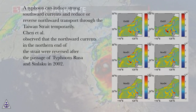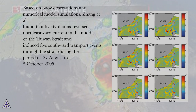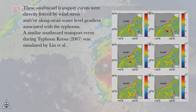Chen et al. observed that the northward currents in the northern end of the strait were reversed after the passage of typhoons Rusa and Sinleku in 2002. Based on buoy observations and numerical model simulations, Zhang et al. found that five typhoons reversed the northeastward current in the middle of the Taiwan Strait and induced five southward transport events through the strait during the period of 27 August to October 5, 2005. These southward transport events were directly forced by wind stress and/or a along-strait water level gradient associated with the typhoons.